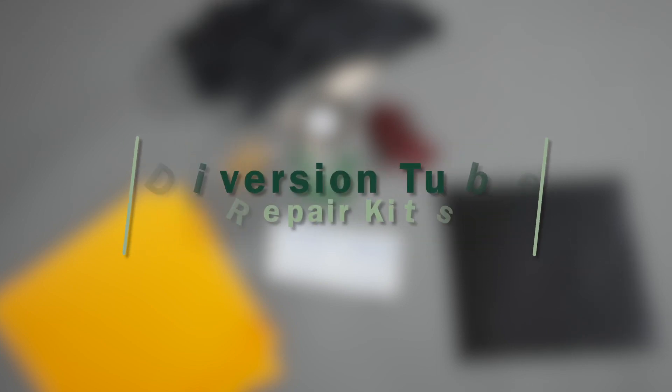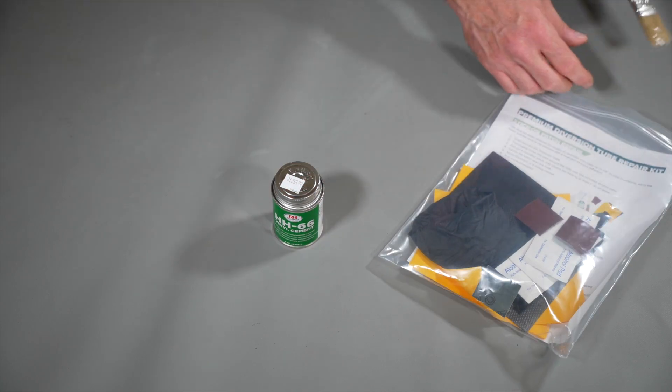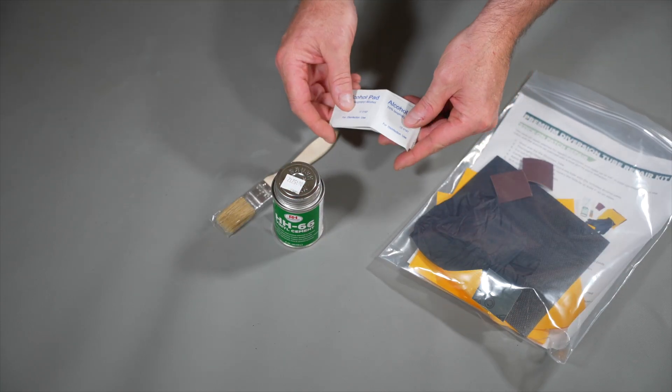Air Environmental Diversion Tube Repair Kits include the following: 1 4-ounce canister of HH66 vinyl cement, 1 1-inch glue brush, 6 alcohol prep pads.